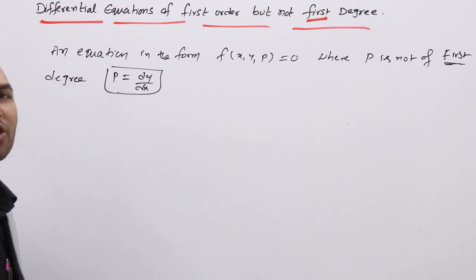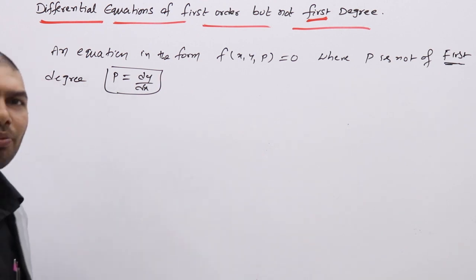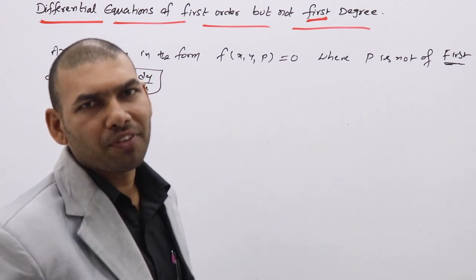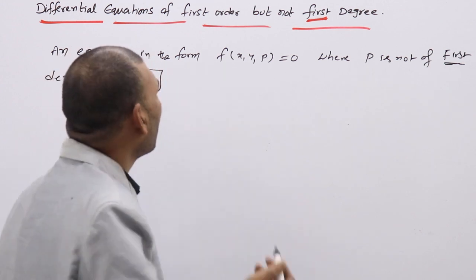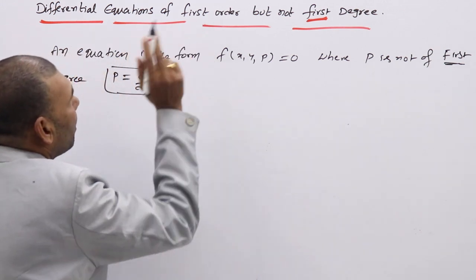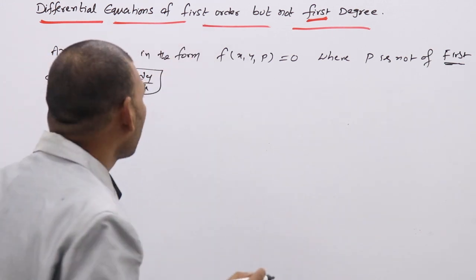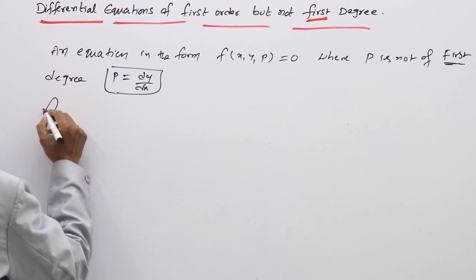That means the equation contains p squared, p cubed, p to the power 4 — that type of equations we call DE of first order but not first degree.